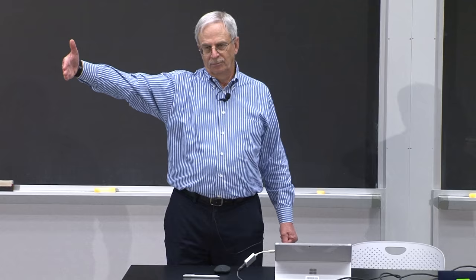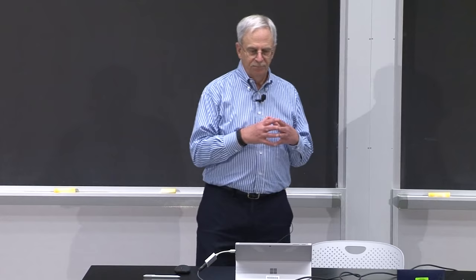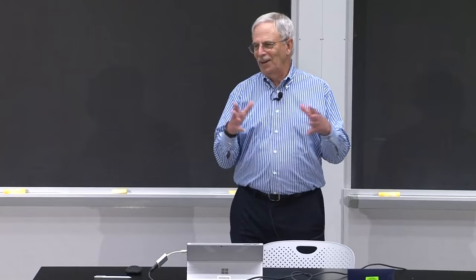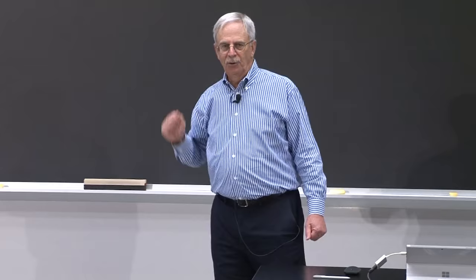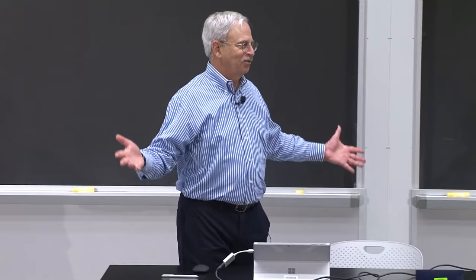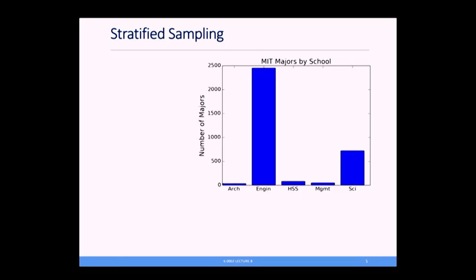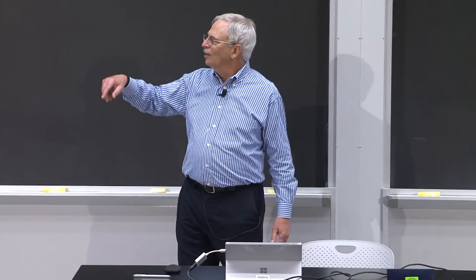That's not always appropriate. Suppose we wanted to survey MIT students to find out what fraction of them are nerds — which I consider a compliment. If we considered a random sample of 100 students, we could walk around campus and choose 100 people at random. But looking at the majors by school, they're not evenly distributed. There'd be a reasonably high probability that all 100 would be from engineering and science.